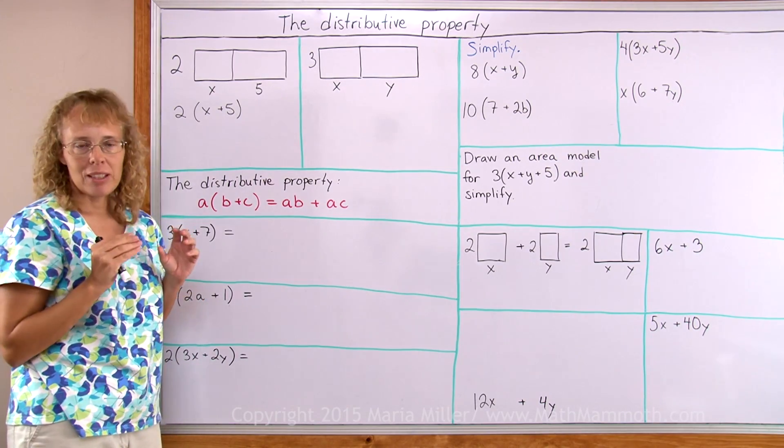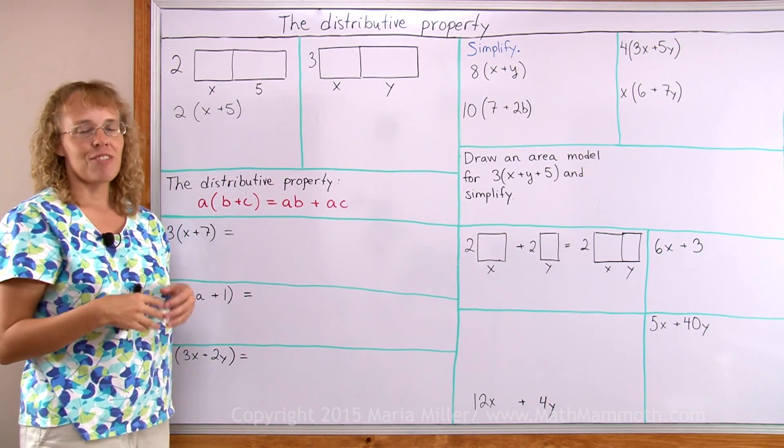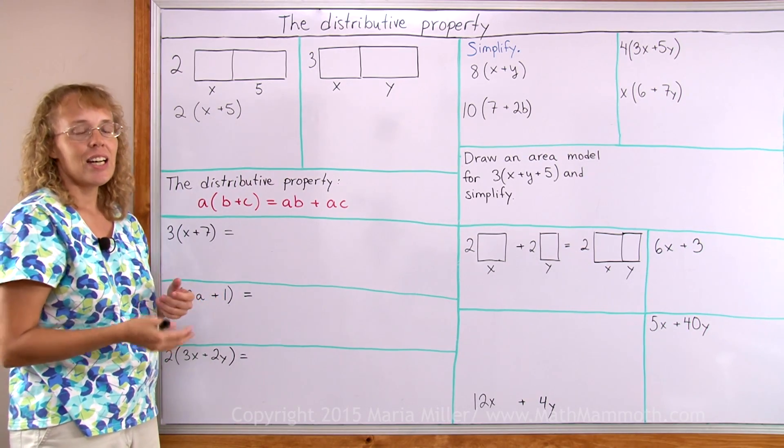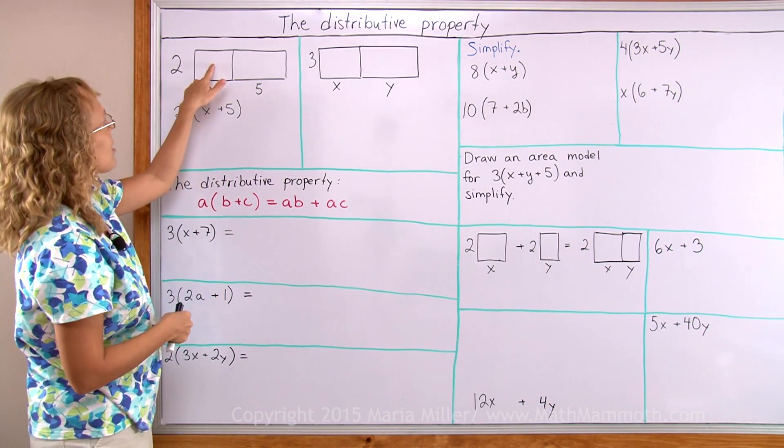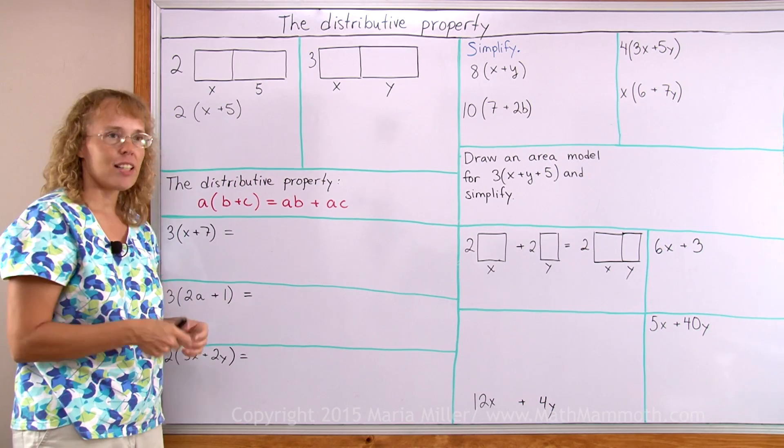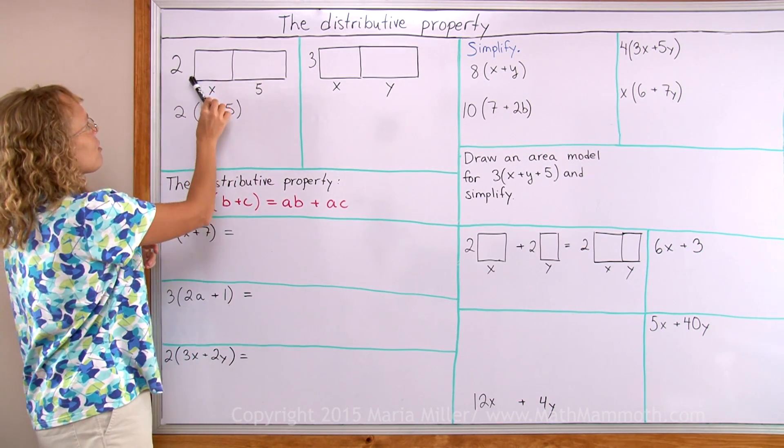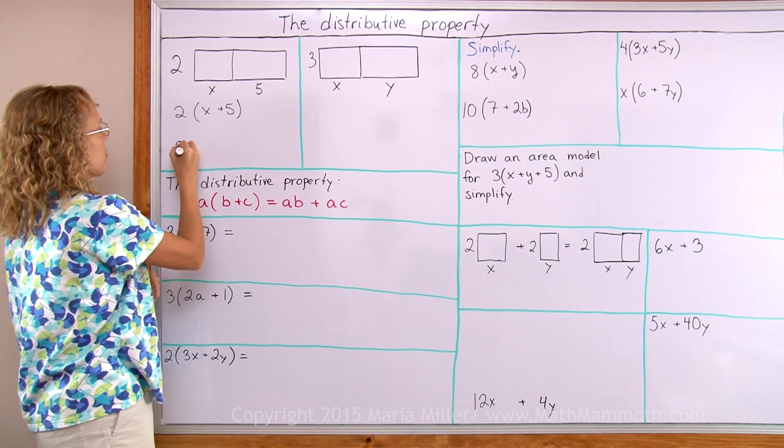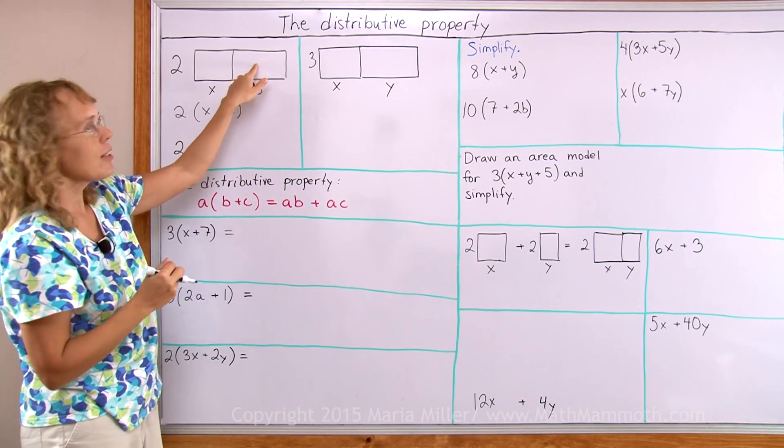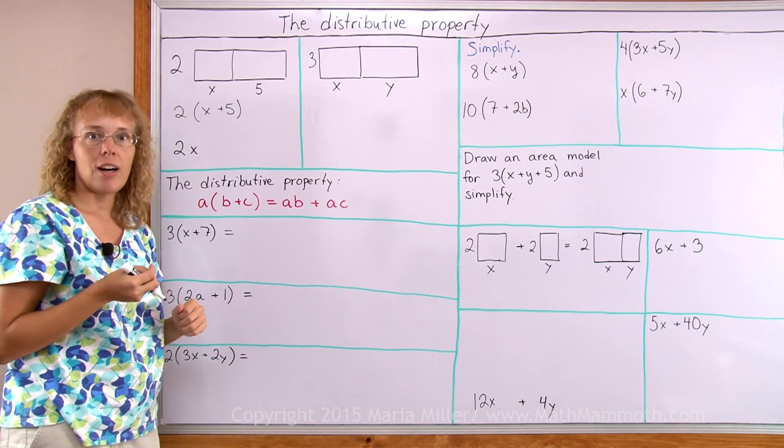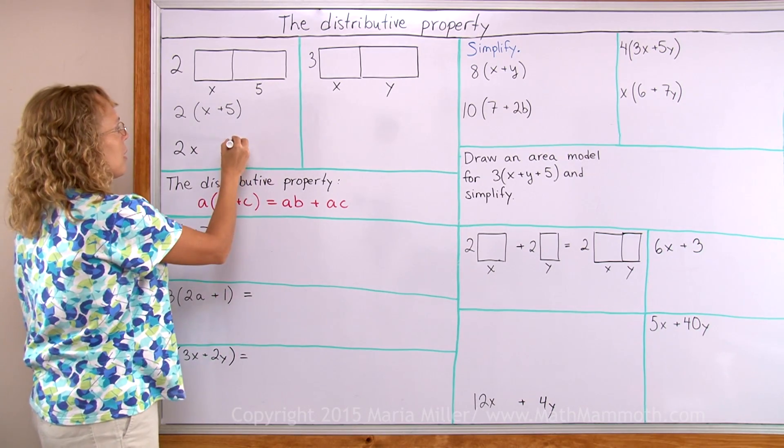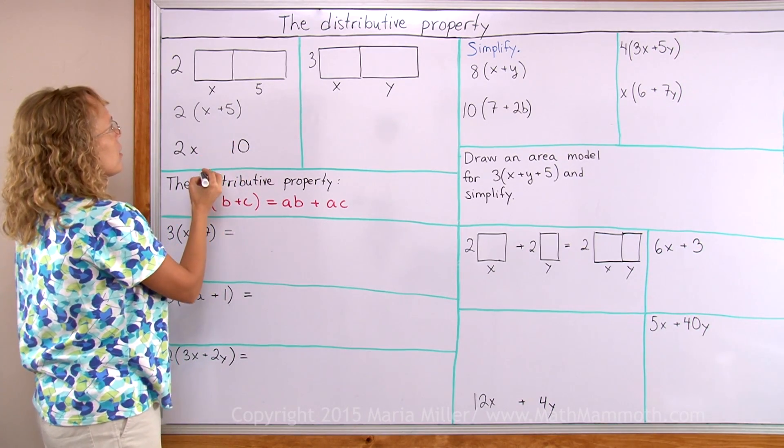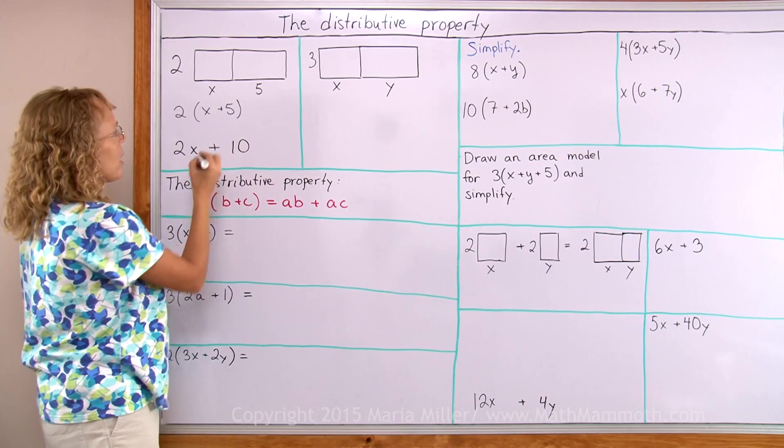And the other way to think about it is if I think of it as two rectangles and add their areas. The area of this first rectangle would be 2 times x and the area of this rectangle is 2 times 5, or 10. 10 square units and then those would be added.